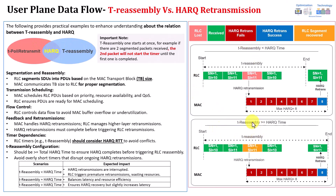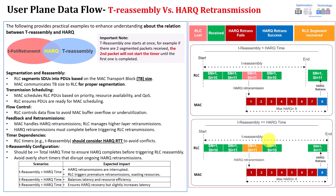Now let's look at the second example at the bottom, where the T-Reassembly timer is greater than the HARQ time. In the same scenario, sequence number one is lost initially. Since the HARQ has enough time, it successfully decodes the data within the reassembly window, and the receiver is able to recover the lost packet.